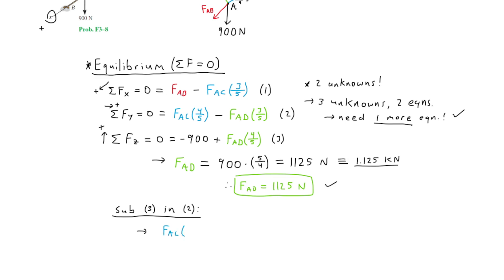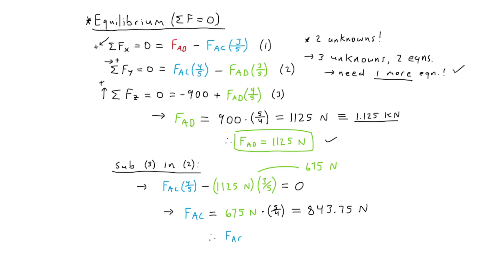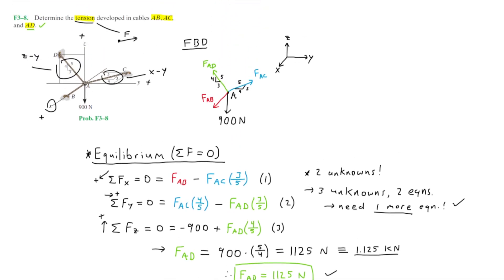We have FAC times four over five minus 1125 newtons times three over five equals zero. Solving for FAC, we move the second term to the right and simplify to get 675 newtons, then multiplying by five over four gives FAC equals 843.75 newtons. Hence the tension in cable AC is 843.75 newtons.